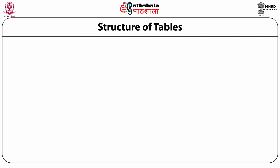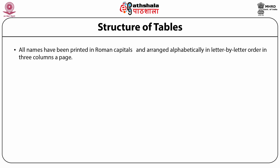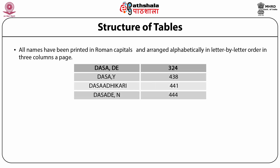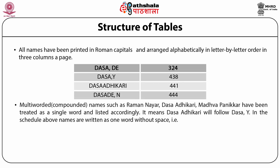The structure of the table: all names have been printed in Roman capitals and arranged alphabetically in letter-by-letter order in three columns a page. For example, taking column D: Dasa-Day 324, Dasa-Y 438, Dasa-Zakari 441, and Dasa-Dayn 444. Multi-worded compound names such as Ramanayar, Dasa-Zakari, and Madhopanikar have been treated as a single word and listed accordingly, meaning Dasa-Zakari will follow Dasa-Y. In the schedule, names are written as one word without a space.